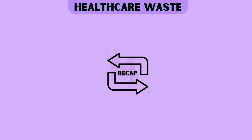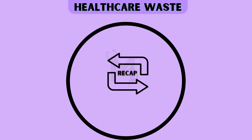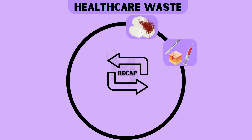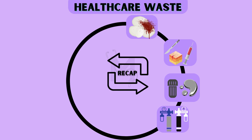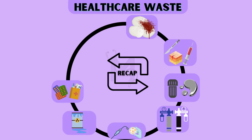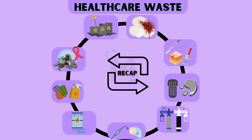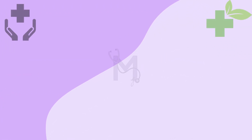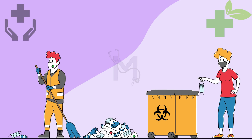To quickly recap, there are nine categories under which healthcare waste has been segregated: pathological waste, sharps, waste with high mercury content, pressurized containers, infectious waste, chemical waste, pharmaceutical waste, genotoxic waste, and lastly radioactive waste. Knowing which category a given type of waste falls under is crucial for ensuring that the best disposal strategy is applied.